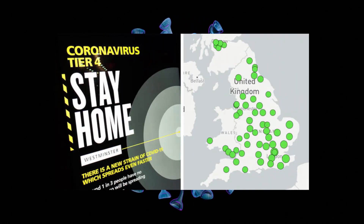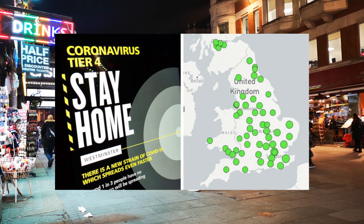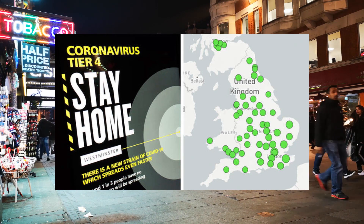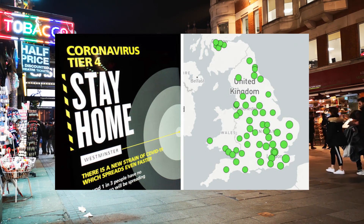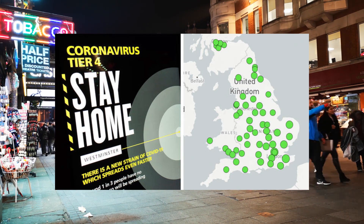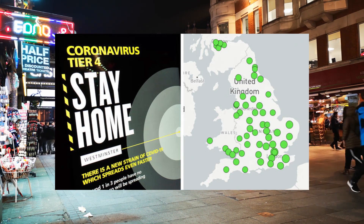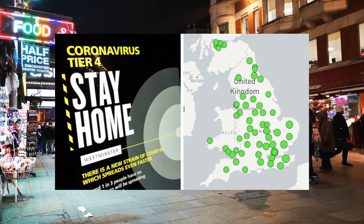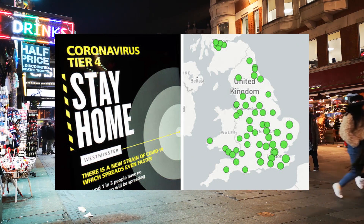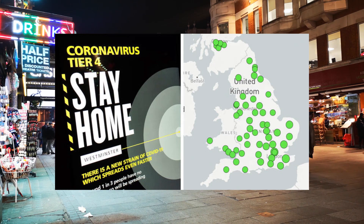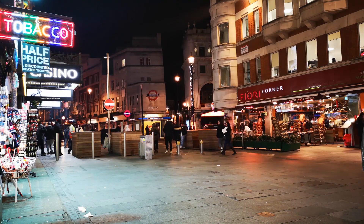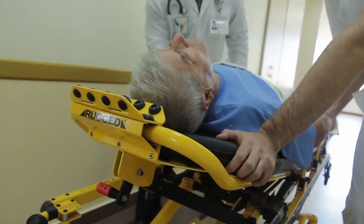In Tier 4 regions, people cannot come out of their houses and cannot visit anywhere. Is the UK the only country affected by the new virus? No, there are other countries affected, but 99% of this new virus is from the UK. Is the UK the origin of the virus? The answer is they still don't know.